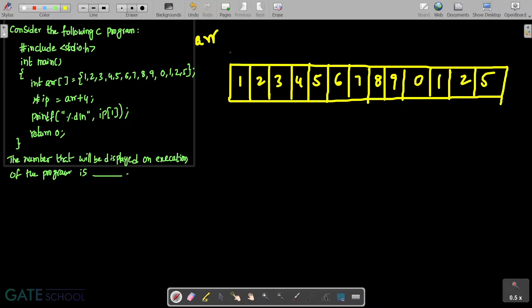ARR is the name of the array and these are the memory locations: 0, 1, 2, 3, 4, 5, 6, 7, 8, 9, 10, 11, and 12.